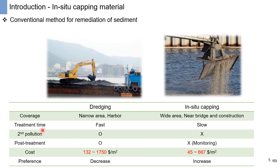Regarding treatment time, dredging has a big advantage because it removes contaminated coastal sediment very fast compared to in-situ capping, which is simply scattered onto the contaminated sediment and takes a long time to activate. However, dredging causes secondary pollution by releasing a large amount of contaminants into the water body, whereas in-situ capping produces no secondary pollution.